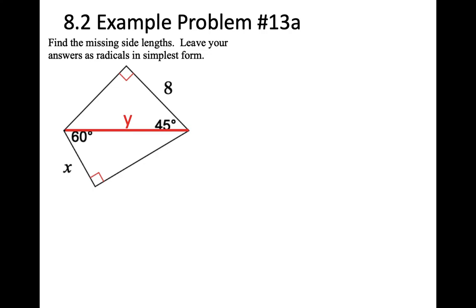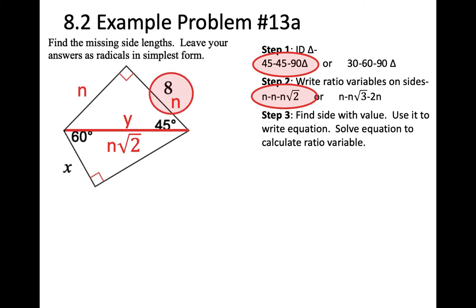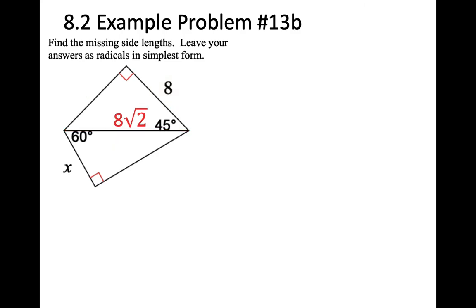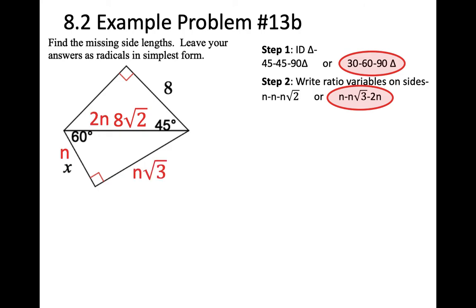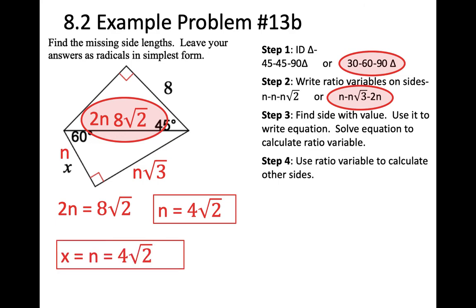Part 13A: using the 45-45-90 triangle with ratios N, N, N root 2. The leg has value 8, so N equals 8. Y equals N root 2, therefore Y equals 8 root 2. Part 13B: now I have a 30-60-90 triangle where the hypotenuse is 8 root 2, with ratios N, N root 3, 2N. So 2N equals 8 root 2, giving N equals 4 root 2. X equals N, therefore X equals 4 root 2.